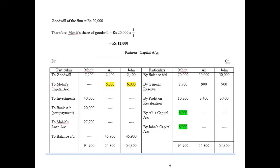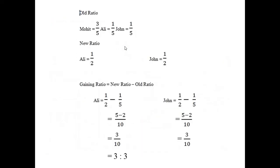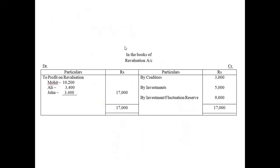In this question, the goodwill of the firm is 20,000 and Mohit's share is 12,000 as per his profit sharing ratio, since Mohit is the retiring partner. This 12,000 will be borne by Ali and John as per their gaining ratio, which is 1:1.